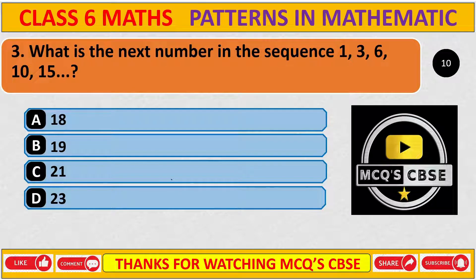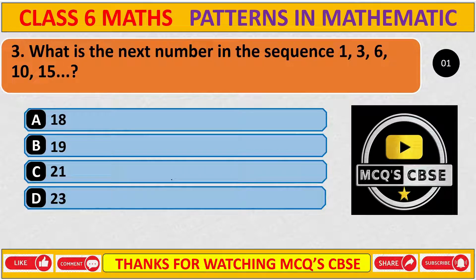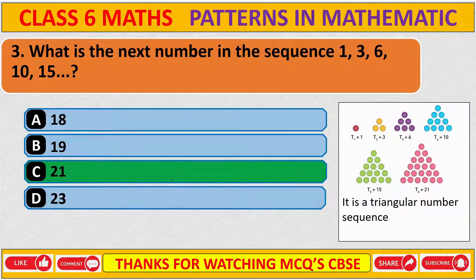What is the next number in the sequence 1, 3, 6, 10, 15? The correct answer is C: 21. Students, this is the triangular number sequence.